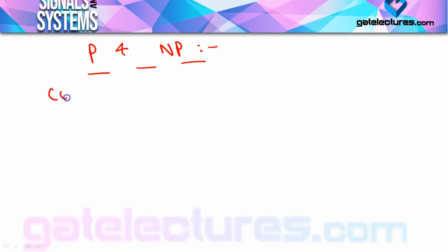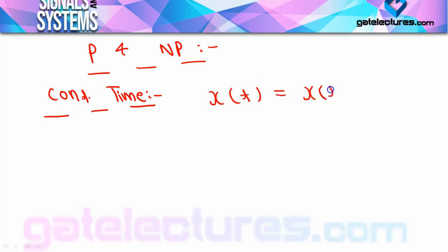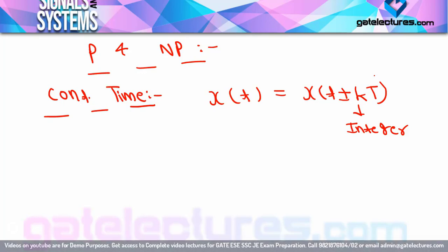First we will analyze continuous time periodic and non-periodic signals. In continuous time, what is a periodic signal? In simple language, a periodic signal repeats itself after a specific time interval. The equation is: x(t) = x(t ± kT), where k is any integer. So if k=1, x(t+T); if k=2, x(t+2T) - the signal repeats after every time interval T.